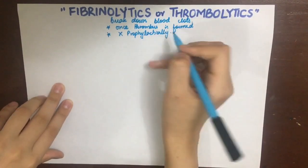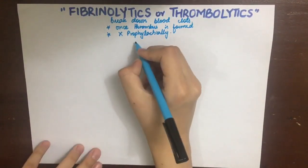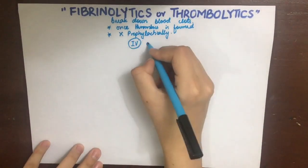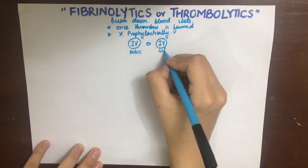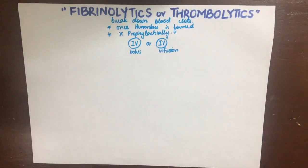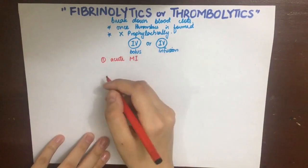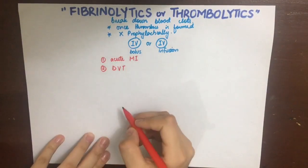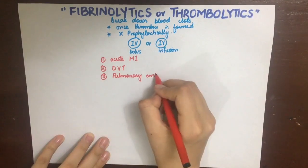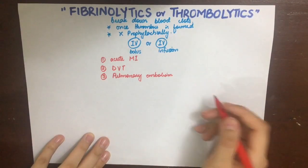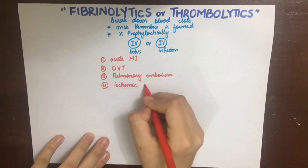They can be used as IV bolus or IV infusion form for short-term emergency management of coronary thrombosis in acute MI, which shows improvement or decrease in mortality in more than 60% of patients if therapy is started within 3 hours post-MI. They are also used for DVT, pulmonary embolism, and ischemic stroke.